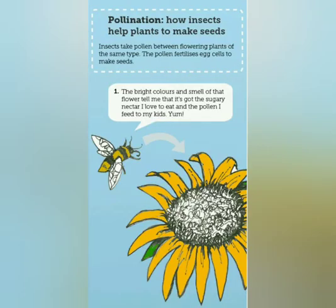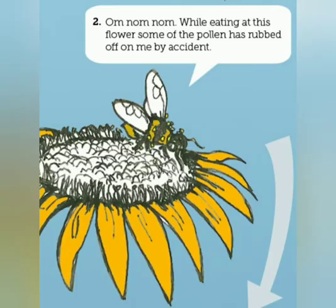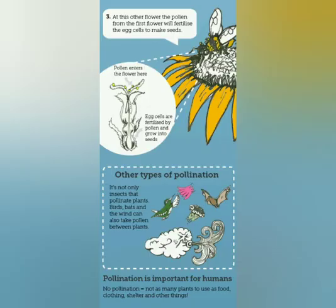So how do bees pollinate? Insects take pollen between flowering plants of the same type. The pollen fertilises egg cells to make seeds. We can see this little bee — he likes the bright colours, the smell of the flower, and the sugary nectar. He's going to go and take some nectar back to the hive. While eating this flower, some of the pollen has rubbed off on him. At the next flower, the pollen from the first flower will now fertilise the egg cells to make the seeds. So he goes from one flower to the other.